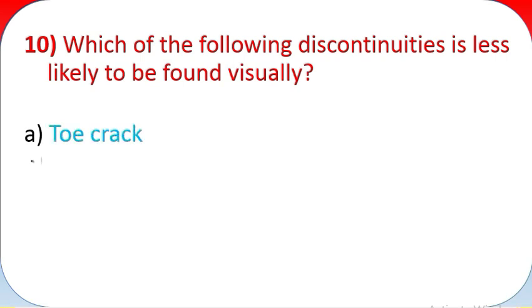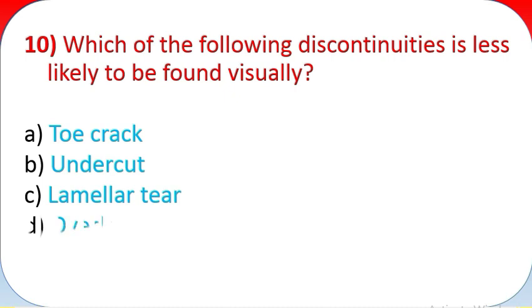Question 10: Which of the following discontinuities is less likely to be found visually? A: Toe crack. B: Undercut. C: Lamellar tear. D: Overlap. E: None of the above.